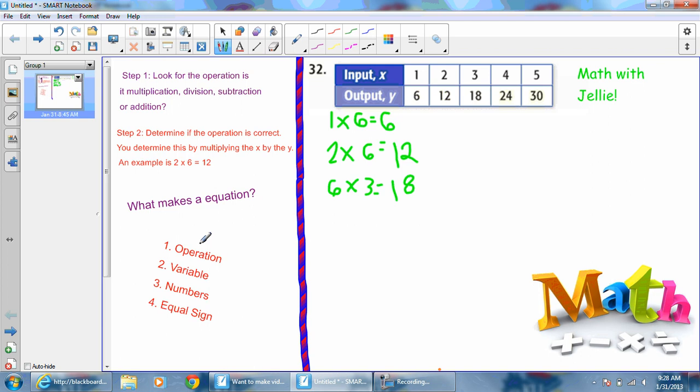What makes an equation? Well, you always have to have an operation, you always have to have a variable, also numbers, and an equal sign.